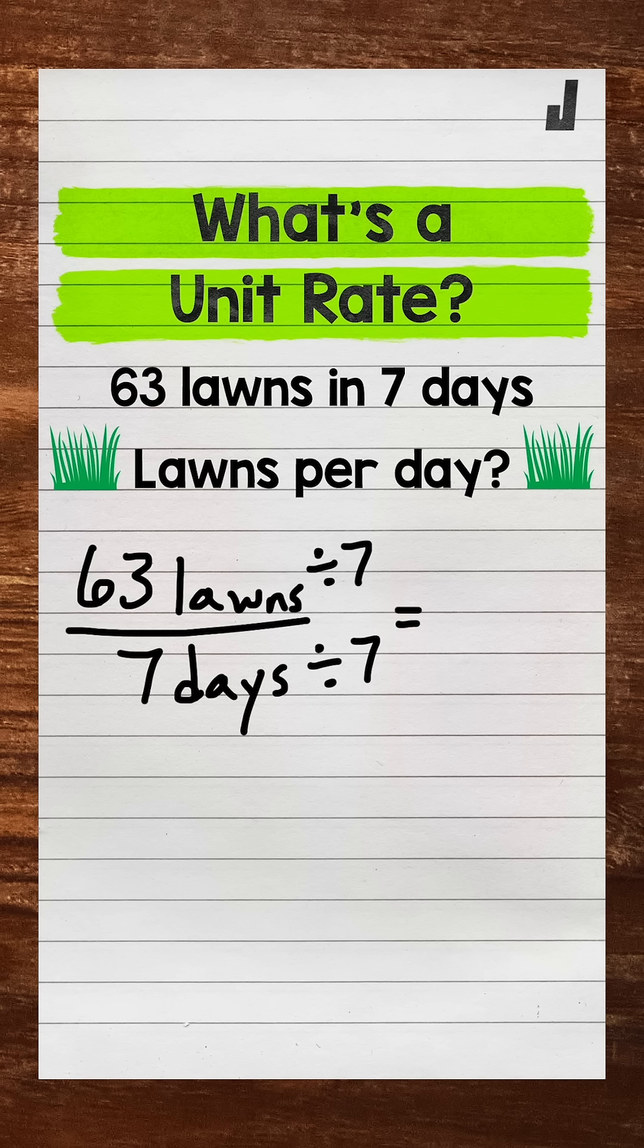63 divided by seven gives us nine. And this is lawns. And then seven divided by seven gives us one. And this is one day.